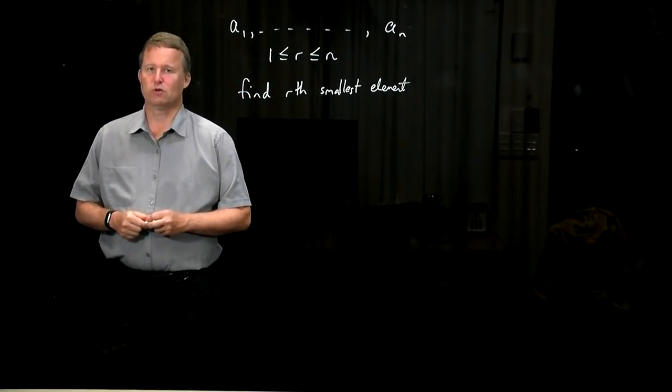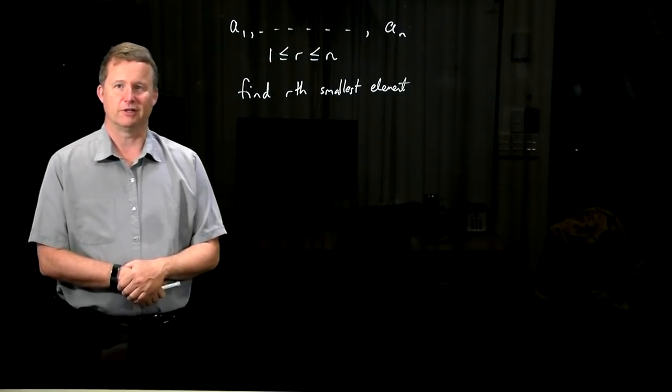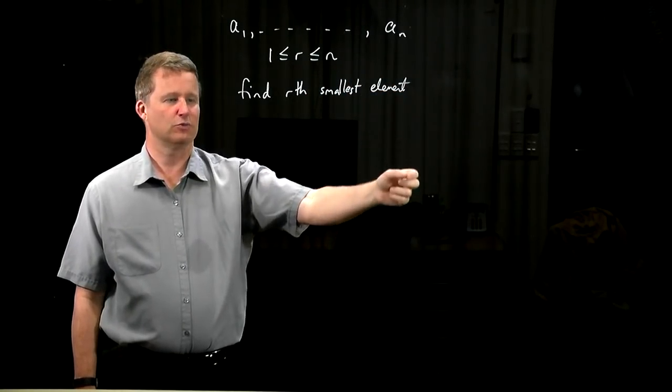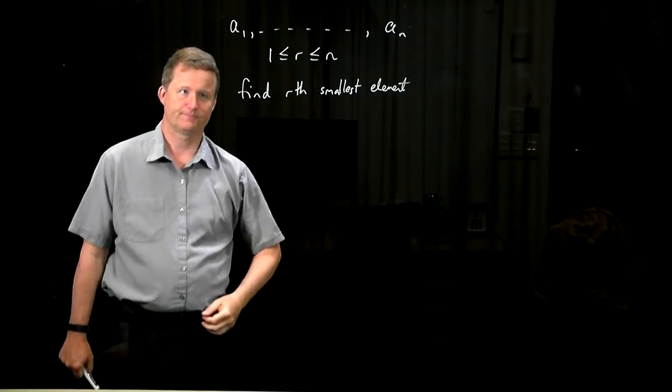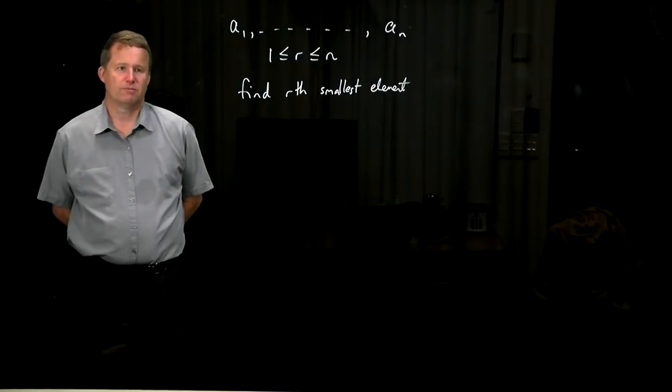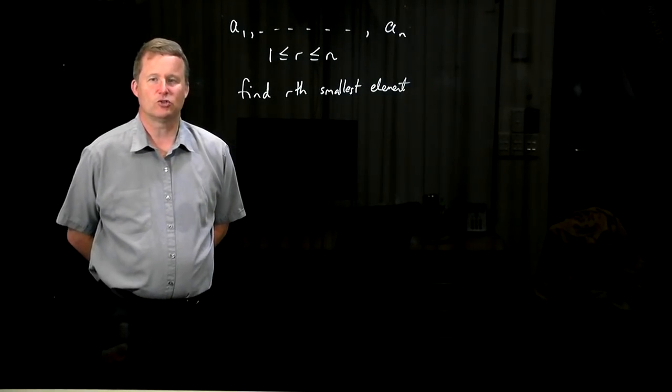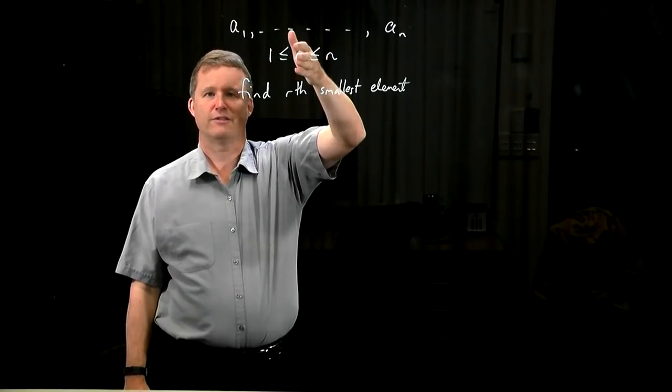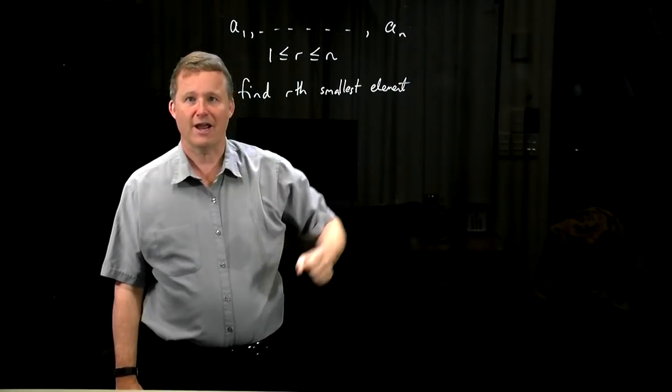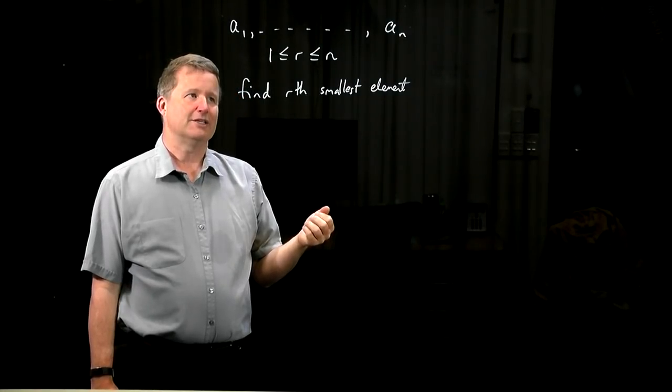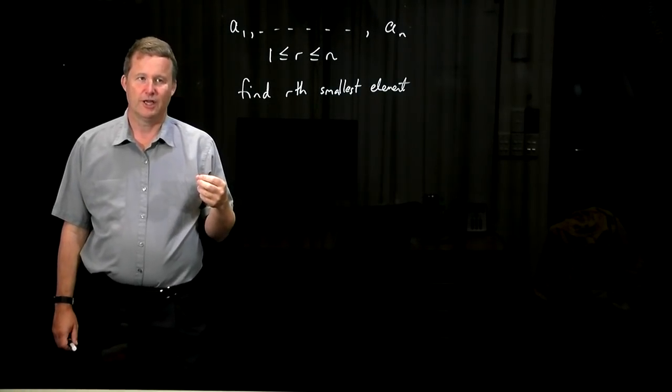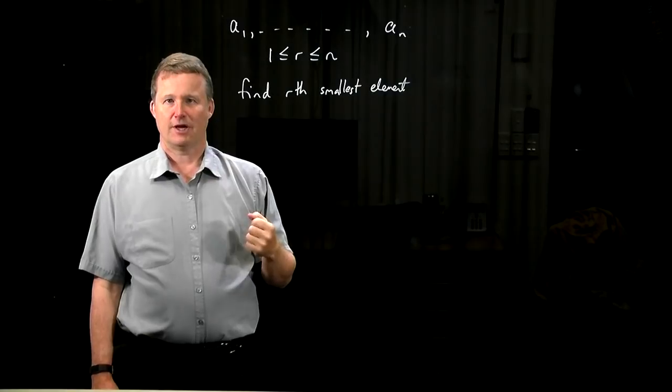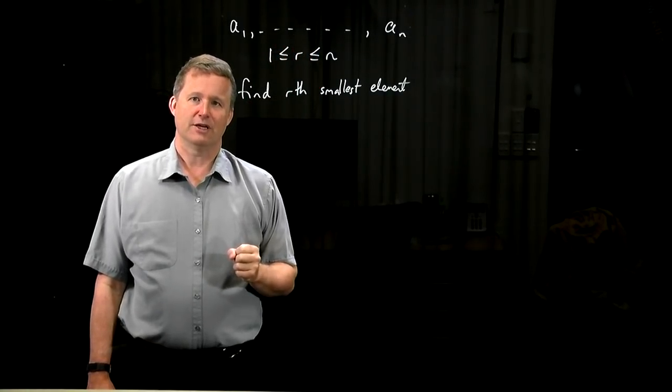Obviously, if we have a selection algorithm that always works, then we can create a sorting algorithm from it - we're just doing selection sort. However, selection is a simpler problem and sometimes we don't need to sort everything. Of course, if we sorted the entire list and then just scanned along till we found the rth element, clearly it's inefficient - we're doing too much work. That would take order n log n time to sort, and then even if you can extract quickly the answer, it's still n log n.